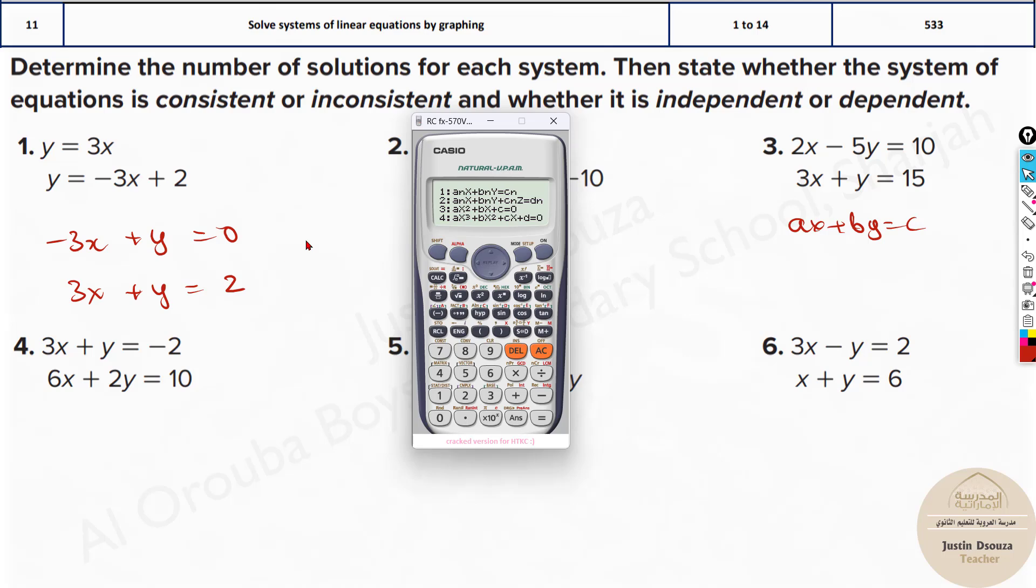We don't have Z variables. So let's go with option 1 and here we have to type in the coefficients of X, Y and the last constant value. The coefficient is minus 3, here will be 1 and lastly we have 0, same thing 3, 1 and 2. Once you type all the values, if you press equal to, you'll get the answers.